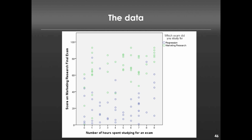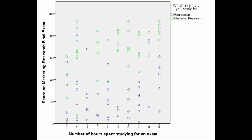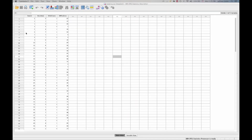Let's just take a look at the data and see what we can observe. On the x-axis we have the number of hours spent studying for any exam — in this hypothetical universe, you can only study for one exam or the other, you can't study for both. On the y-axis we have the score on the marketing research final exam. In green are all the data points for those who studied for marketing research, and in blue we have the scores for those who studied for regression. We can see that the green dots tend to be above the blue dots — studying for marketing research is probably more effective than studying for regression — and perhaps there's also a positive correlation such that the more time you spend studying, the better off you are on the final exam, but we have to test that empirically.